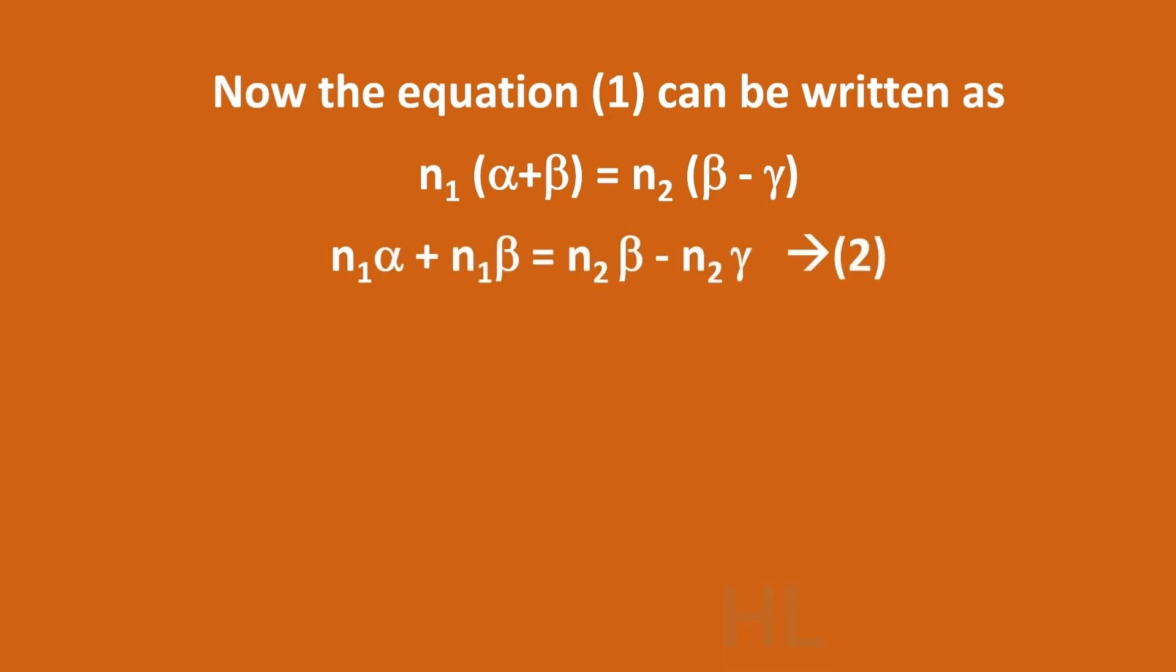Then distributing, we get equation number 2. For small angles, we can also write alpha equal to tan alpha, beta equal to tan beta, and gamma equal to tan gamma.